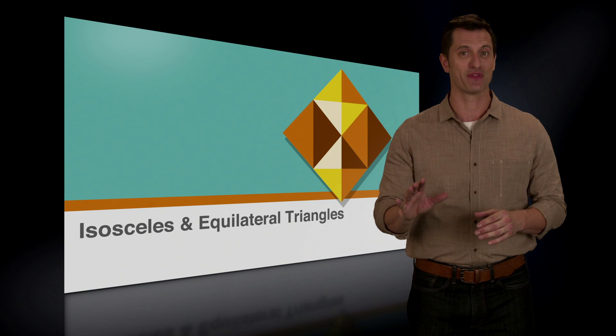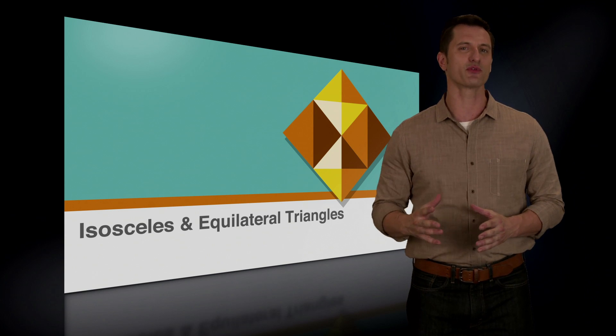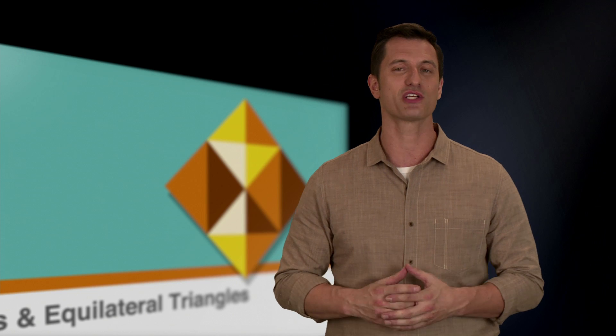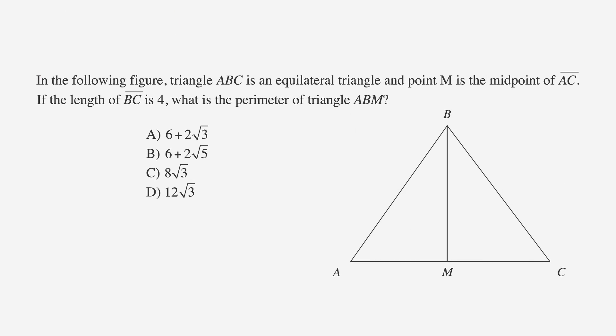Okay, one last problem. Let's see if we can use one of the rules of equilateral triangles that we just discussed. Remember to watch out for telltale signs that give away the type of triangle you are looking for, and see if you can apply the knowledge you have. In the following figure, triangle ABC is an equilateral triangle, and point M is the midpoint of line segment AC. If the length of side BC is 4, what is the perimeter of triangle ABM? Here are your answer choices.